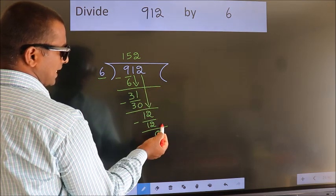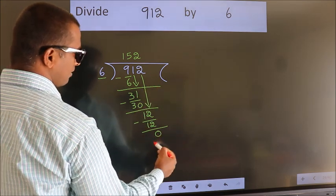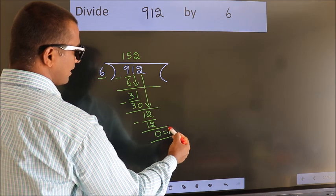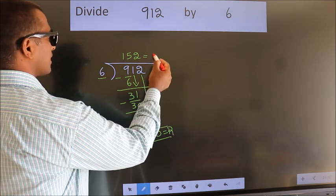No more numbers to bring it down. So we stop here. This is our remainder. This is our quotient.